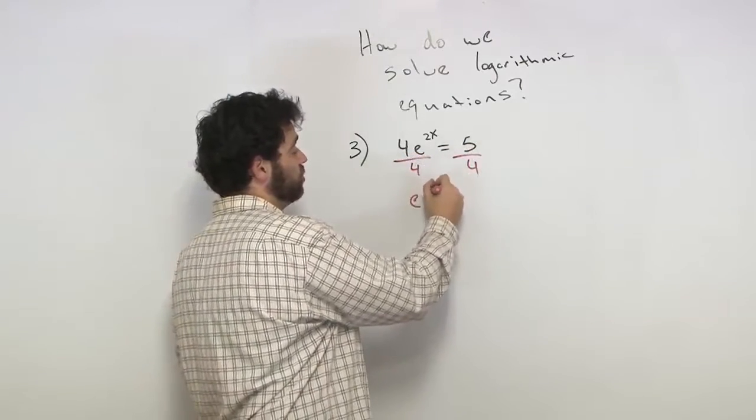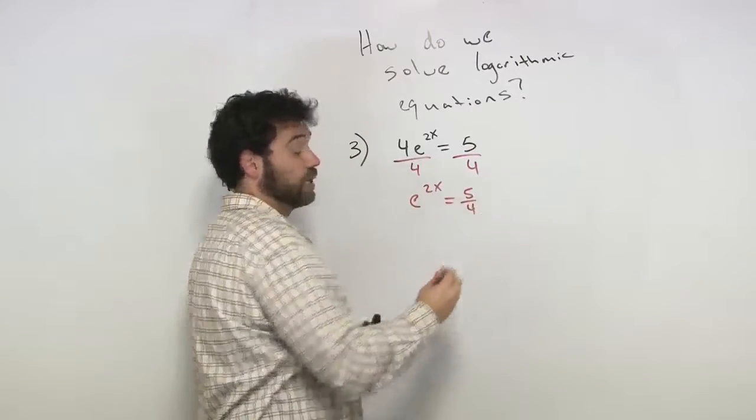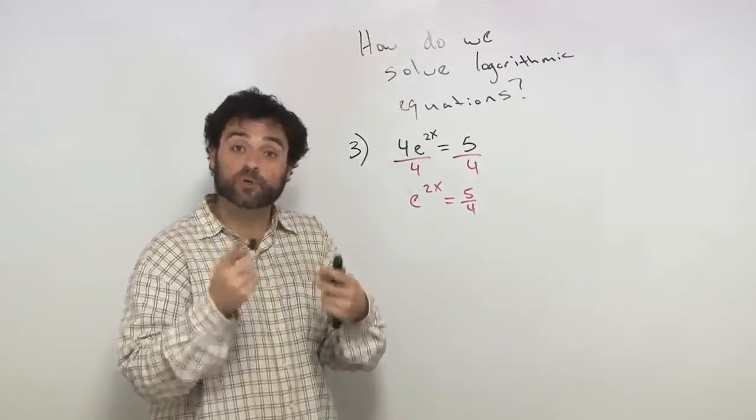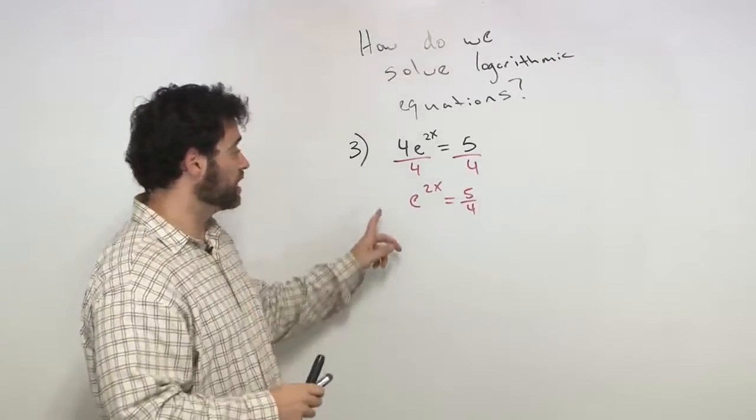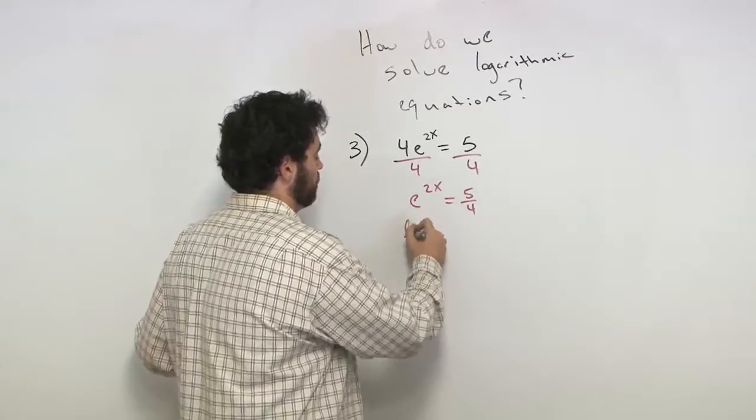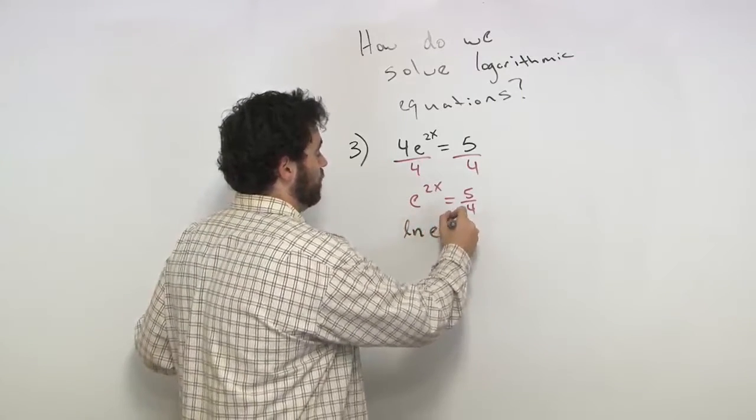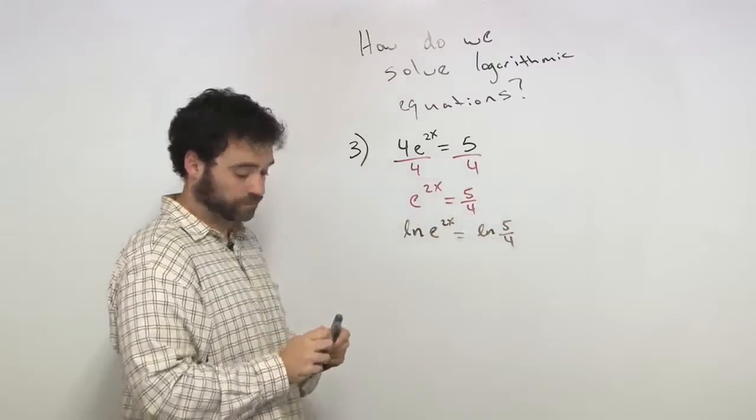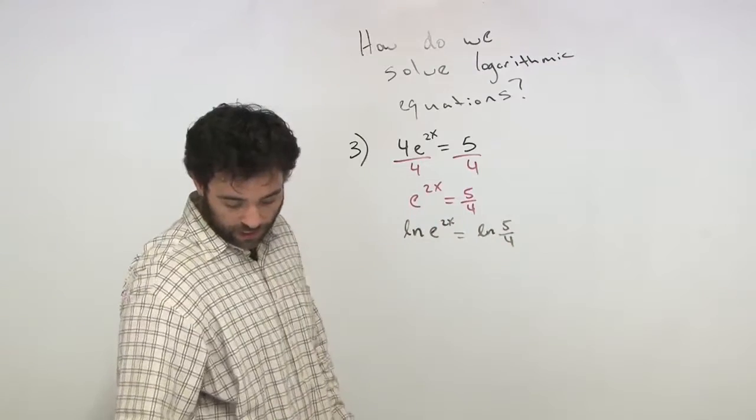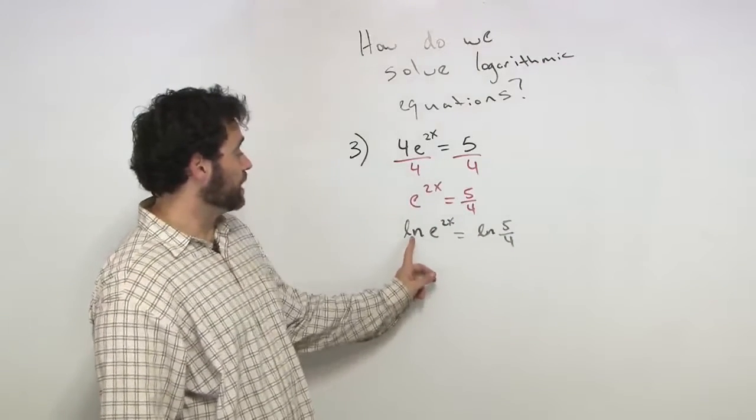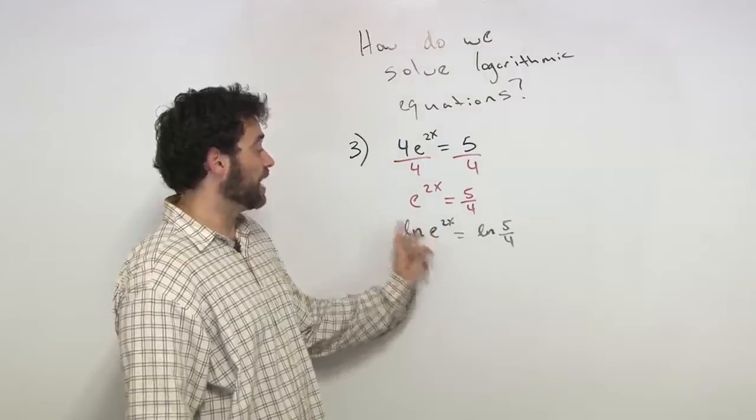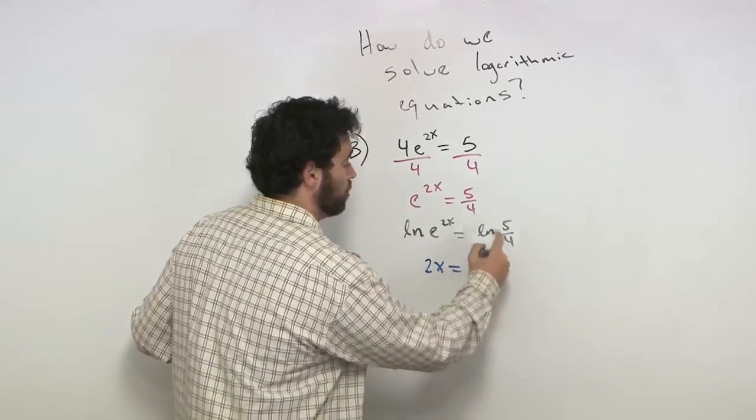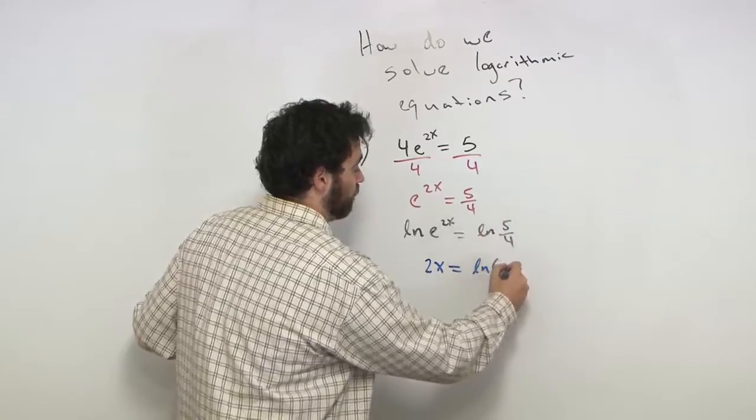So, I get e to the 2x equals 5 over 4. What do I do next, you say? Again, what's the inverse? Natural log. Very good. Nice for paying attention. So, natural log. So, we have the natural log of e to the 2x equals natural log of 5 over 4. And what happens here? The natural log and e cancel out. So, I get 2x equals natural log of 5 over 4.